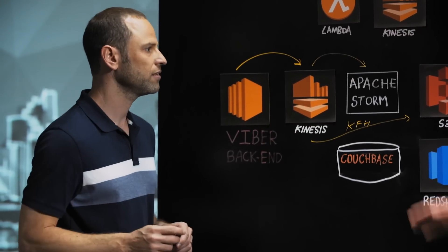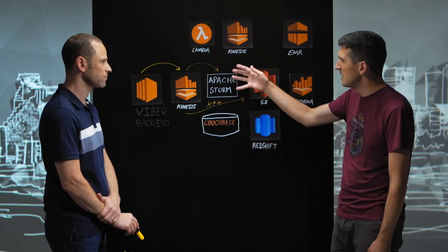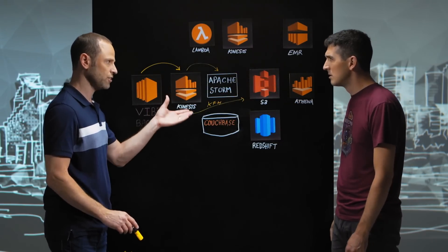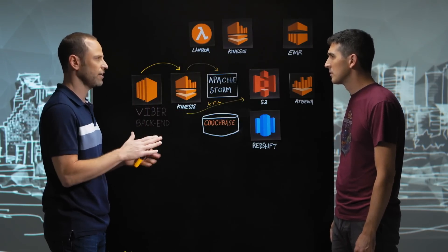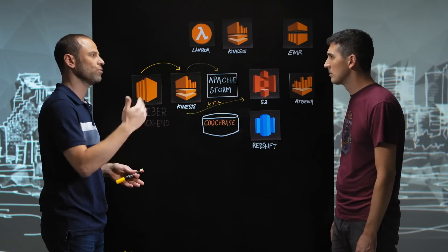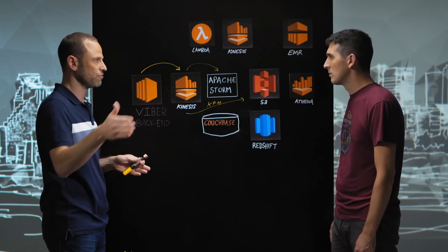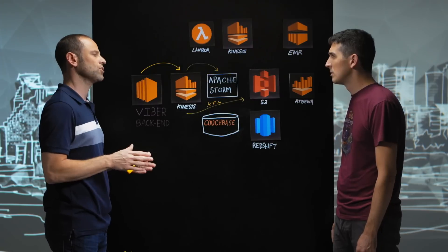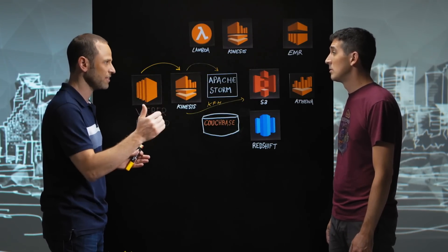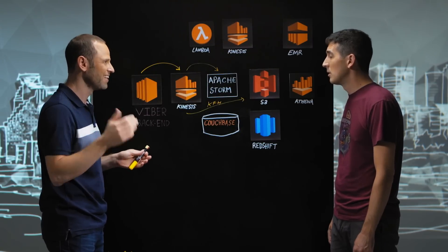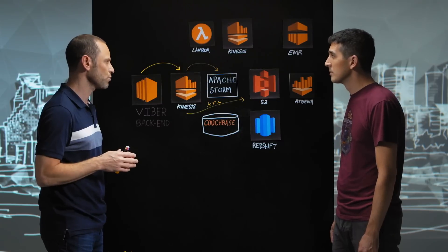The KCL is reading the events and it's running on the EC2 cluster that Apache Storm is running on. It's taking each event and spreading it into the different event types. We're running over 200 event types on a single Kinesis stream, so the first job is basically to split them into the different events. These events are also running in very different throughputs — some over 80,000 to 90,000 per second and others happening once a minute.